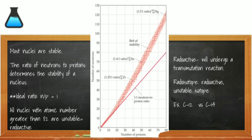As an element gets larger and we try to add more and more protons into a nucleus, the nuclei become unstable. Once we get to atomic number 83 or higher, none of the isotopes are stable — meaning all of the isotopes are radioactive. But radioactive isotopes don't have to come from only large nuclei. Let's look at the example of carbon-12 and carbon-14.